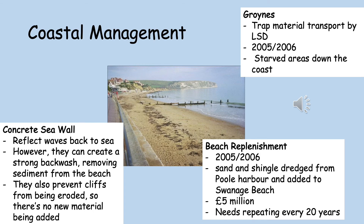Now we're going to think about human activity along the Dorset coastline. In terms of coastal management, there are three main types that you need to know about, and these all occur on Swanage Bay. The first is a concrete sea wall, which can be seen on the left hand side of the photograph. Sea walls reflect waves back to sea; however, they can create a strong backwash which removes sediment from the beach. They can also prevent cliffs from being eroded, meaning no new material is added to the beach, which can lead to the beach decreasing in size over time.